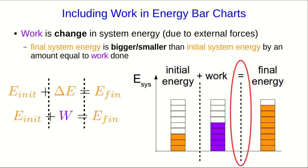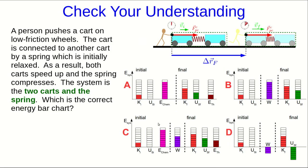Let's check your understanding of how to include work in an energy bar chart. So here I have a situation where we have two carts on low friction wheels, and they're connected together by a spring which is initially relaxed. And a person pushes on them so that they both speed up and the spring compresses as a result. The system, as I've shown in the diagram, is the two carts and the spring. And choose which of these is the correct energy bar chart.